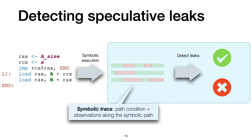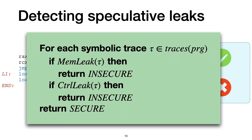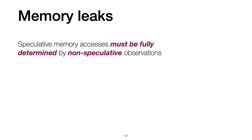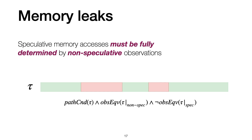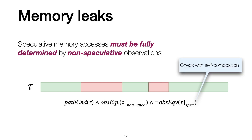Next, we analyze the symbolic traces to detect possible leaks. Concretely, we analyze each symbolic trace. If we detect leaks caused by memory or control flow operations, we flag the program as insecure; otherwise we flag the program as secure. I will give you some insights about how we detect leaks caused by memory operations. To be secure, a memory access executed speculatively must be fully determined by information disclosed through non-speculative observations. Given a symbolic trace, we encode the presence of memory leaks as a logical formula. This formula consists of three main components and relies on a trick called self-composition.